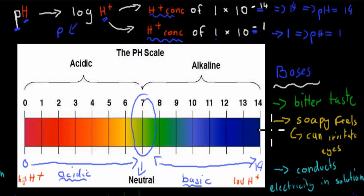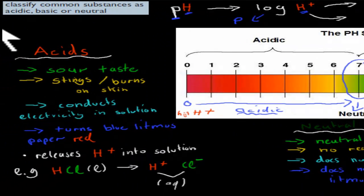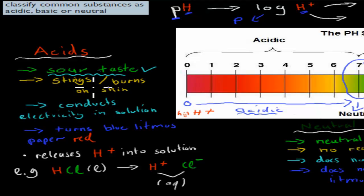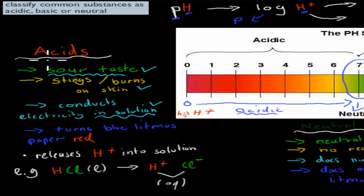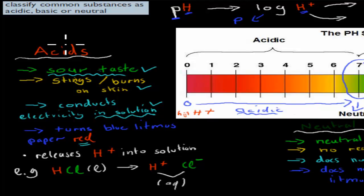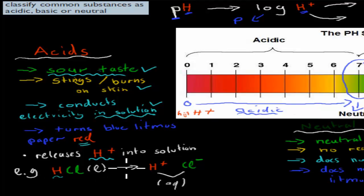I'll go over the properties of acids, bases, and neutral substances. First, acids usually taste sour — for example, lemon juice tastes sour because it's acidic. They sting or burn when they come in contact with skin. They conduct electricity, but only when in solution. Blue litmus paper turns red when exposed to an acid. And acids release hydrogen ions when dissolved in water — for example, hydrochloric acid in water releases H⁺ and Cl⁻ ions, and it's the hydrogen ions that make it acidic.